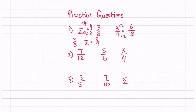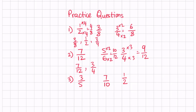For question two, we have denominators of four, six, and twelve, so the common denominator is twelve. Multiplying five sixths by two gives ten over twelve, and multiplying three quarters by three gives nine over twelve. Ordering them: seven twelfths is the smallest, then nine twelfths — so we write three quarters — and then ten twelfths, so five sixths is the largest.